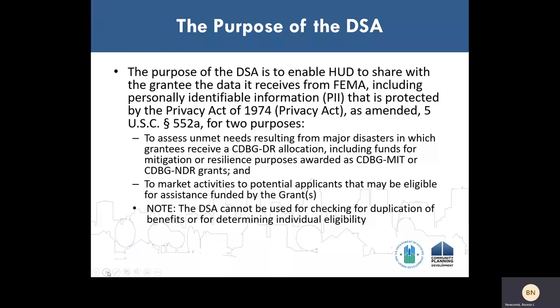The purpose of the data sharing agreement is to enable HUD to share with the grantee the data it receives from FEMA, including personally identifiable information that is protected by the Privacy Act of 1974, for two specific purposes. First, to assess unmet needs resulting from major disasters for which a grantee receives a Community Development Block Grant disaster recovery allocation, and to plan for the use of the grant. This can include funds for electric power systems, mitigation or resilience purposes allocated or awarded as CDBG-DR, CDBG mitigation, or CDBG NDR grants. The second purpose is to market activities to potential applicants that may be eligible for assistance funded by the grants. Unlike the computer matching agreement, the data obtained under the data sharing agreement cannot be used for checking for duplication of benefits or for determining eligibility of an individual.